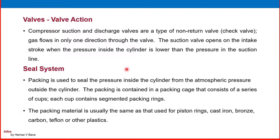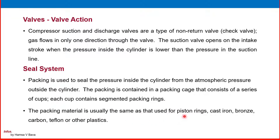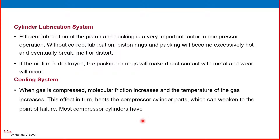Regarding valve action: compressor suction and discharge valves are a type of non-return valve, like a check valve — gas flows only in one direction through the valve. The suction valve opens on the intake stroke when the pressure inside the cylinder is lower than the pressure in the suction line. Seal system packing is used to seal the pressure inside the cylinder from the atmospheric pressure outside. The packing is contained in a packing case consisting of a series of cups, each containing segmented packing rings. The packing material is usually the same as that used for piston rings — cast iron, bronze, carbon, Teflon, or other plastics.